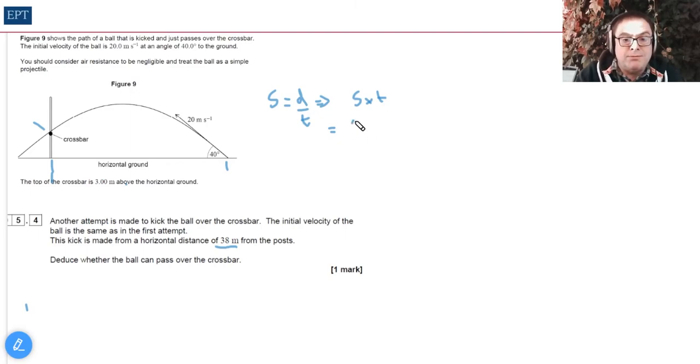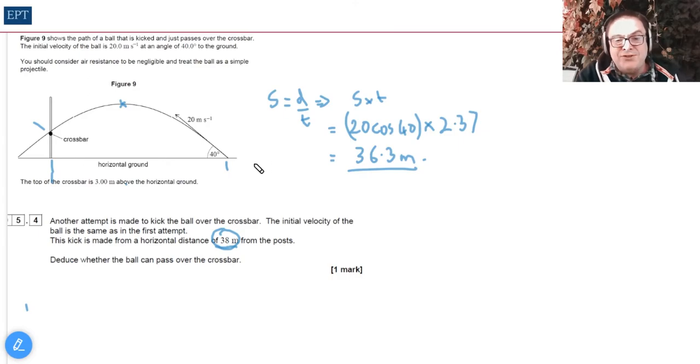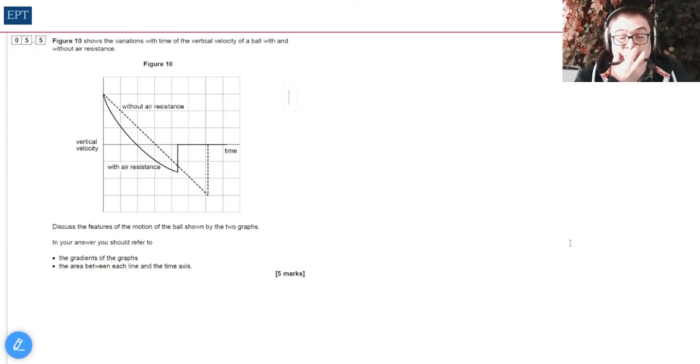When you do that, you get 36.3 meters. Now in our question, we've been told it's going from 38 meters, so that means if we're starting slightly further away, just under two meters, it's going to peak earlier. It's going to follow exactly the same path, so it's going to go under the crossbar there. So the answer is a categorical no.